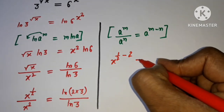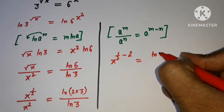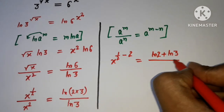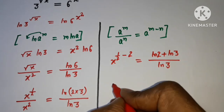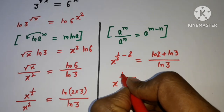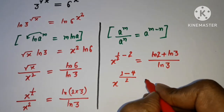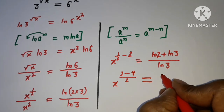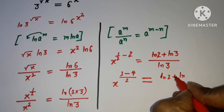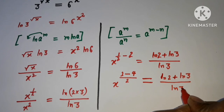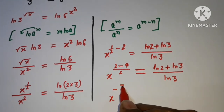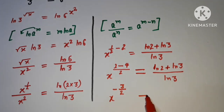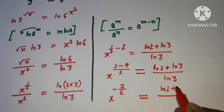Applying this, we get 1/2 minus 2, which equals negative 3/2. The right-hand side has ln 2 plus ln 3 divided by ln 3. So we have x to the power negative 3/2 equals (ln 2 plus ln 3) divided by ln 3.